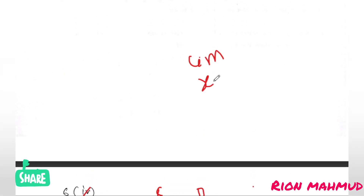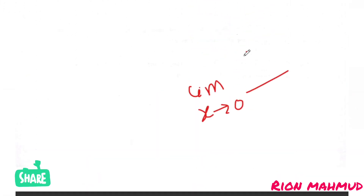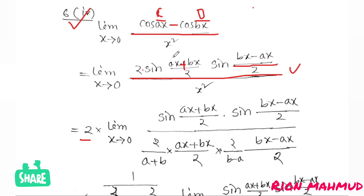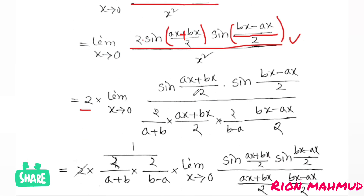As x tends to 0, we apply the standard limit sinθ/θ → 1. So we have sin((b+1)x/2) over x times sin((bx-x)/2) over x. Using the sinx/x limit: sin((b+1)x/2) divided by x gives (b+1)/2, and sin((bx-x)/2) divided by x gives (b-1)/2.